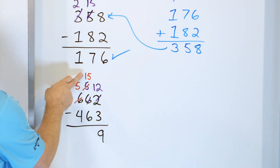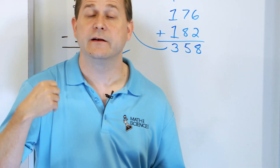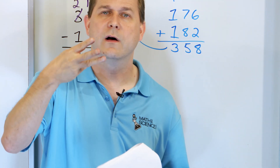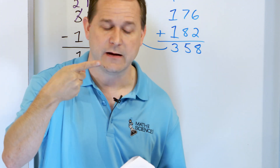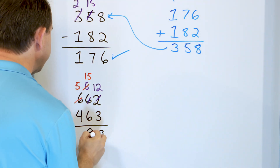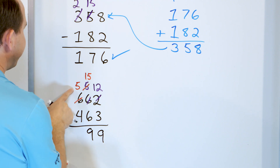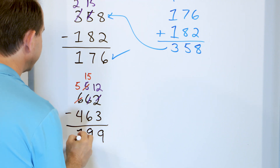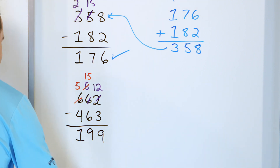So now we have 15 minus 6: start with 15, go down: 14, 13, 12, 11, 10, 9. We land on 9 — 15 minus 6 is 9. And then lastly we have 5 minus 4, which is just going to be 1. So we believe the answer is 199.